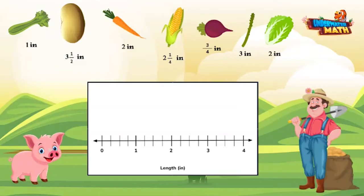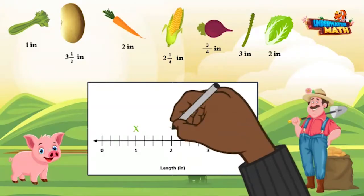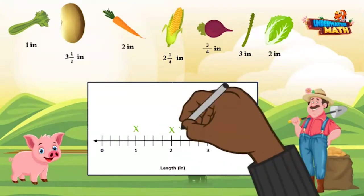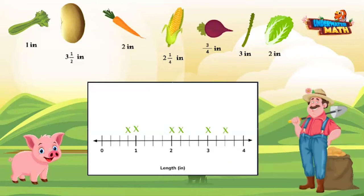The celery is one inch, the potato is three and a half inches, the carrot is two inches, the corn is two and one fourth inches, the beet is three fourths of an inch, the asparagus is three inches, and the head of lettuce is two inches. Double check that you've included every data number on the line plot and you're done.